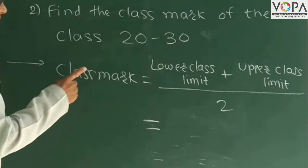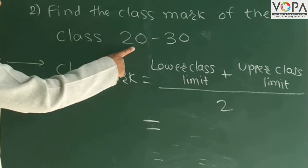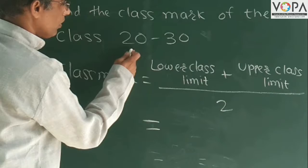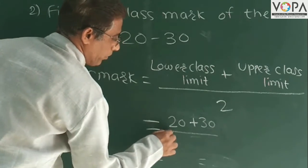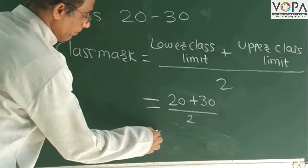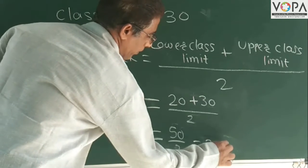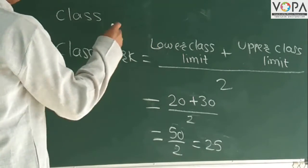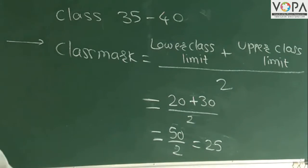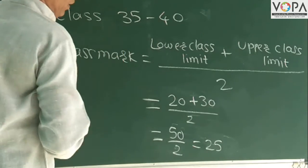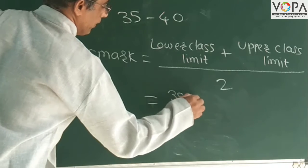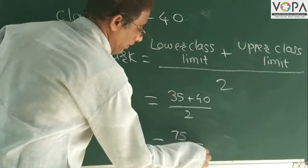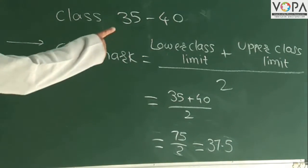Question number 2: find the class mark of the class 20 to 30. Here the lower class limit is 20 and the upper class limit is 30. The class mark equals (lower class limit + upper class limit) / 2, so (20 + 30) / 2 = 50 / 2 = 25. For class 35 to 40: (35 + 40) / 2 = 75 / 2 = 37.5. So 37.5 is the class mark of the class 35 to 40.